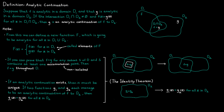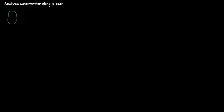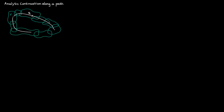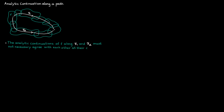So far we have only discussed analytic continuation from one domain to another, but this process can be repeated an infinite number of times. By using overlapping domains, we can travel from one point in the complex plane to another. This process is called analytic continuation along a path. However, we must remember that there may be more than one path from a starting point to an endpoint, and the analytic continuations along two different paths, gamma1 and gamma2, do not necessarily agree at their common endpoint.